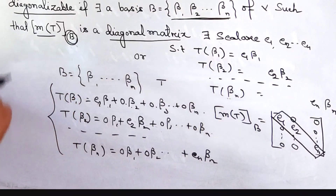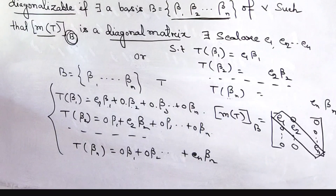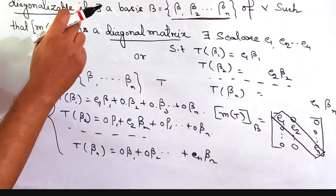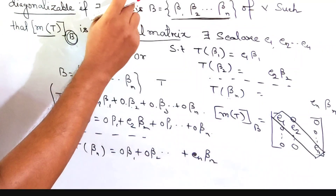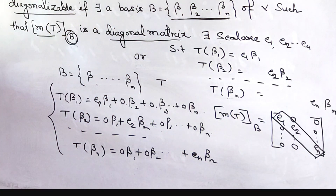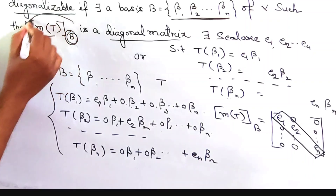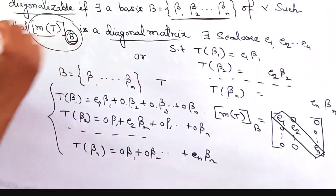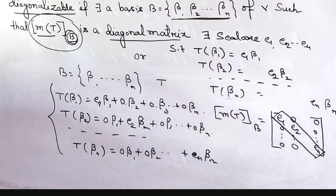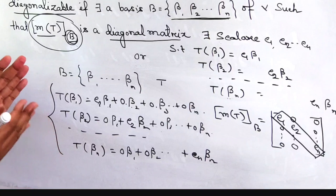So we can say that if the linear operator is diagonalizable, then any basis B that contains all the eigenvectors of T means the matrix representation of T with respect to this basis must be a diagonal matrix. This is the definition of diagonalization of a linear operator, and this is the establishment of the definition.